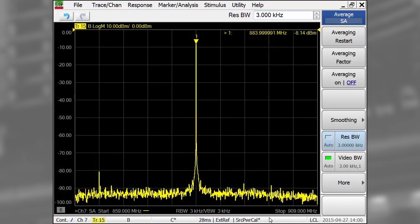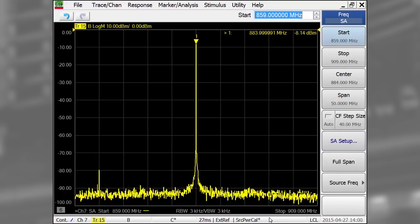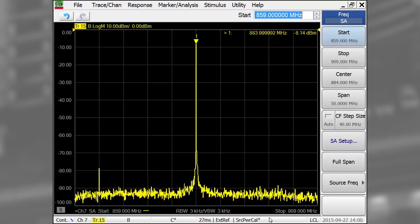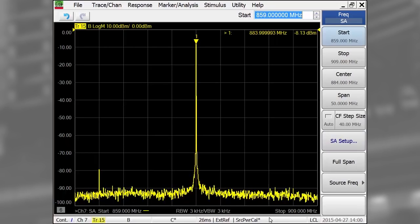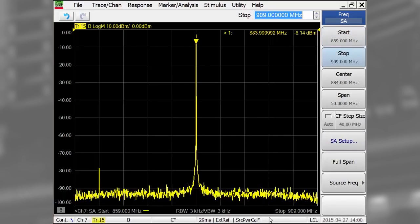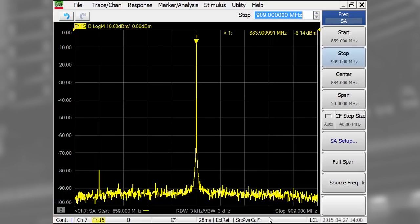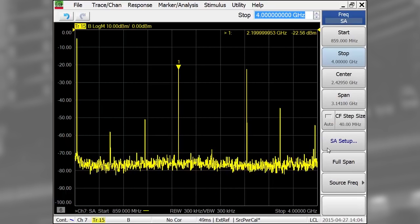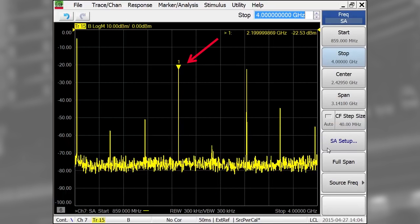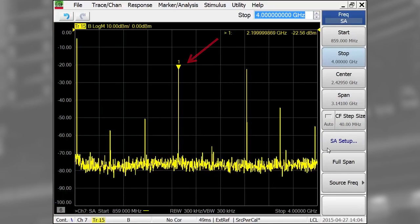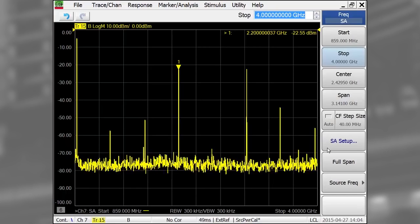Since I suspect that LO feed-through at 2.2 GHz is causing the compression of the noise receiver, I will set the stop frequency of the spectrum measurement to 4 GHz. Sure enough, I can see that the LO feed-through is very strong, about minus 25 dBm, and it remains fixed as the input power is dropped.